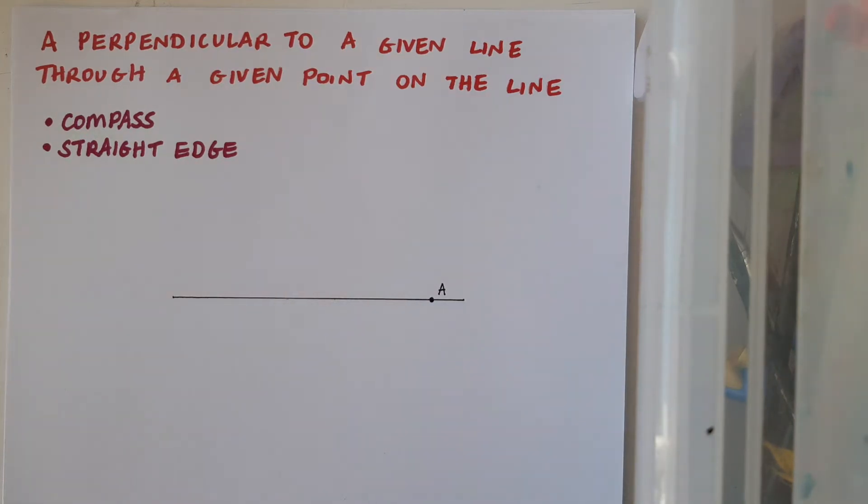The issue that I have is that when I go to actually construct perpendicular lines the only way I have of doing that with the compass is by actually doing a perpendicular bisector, but clearly A isn't in the middle of this line.